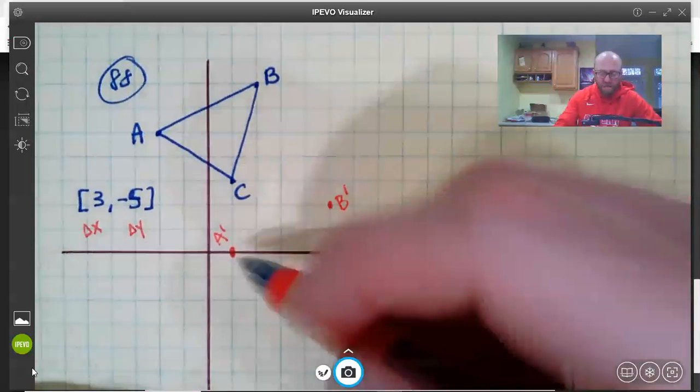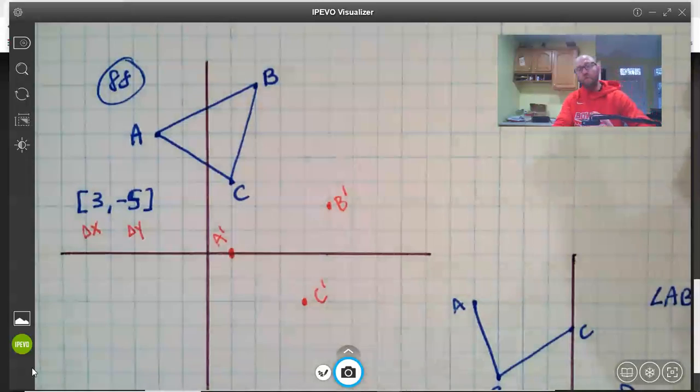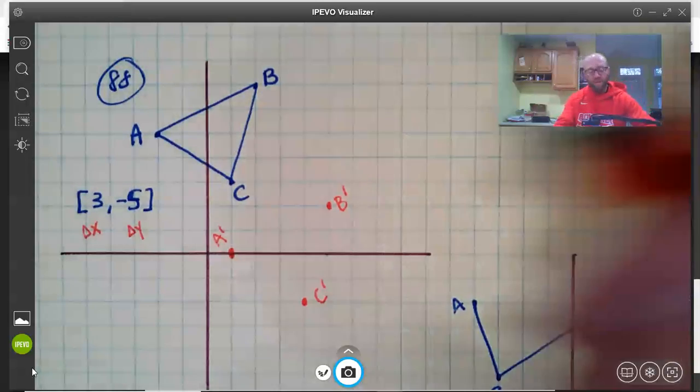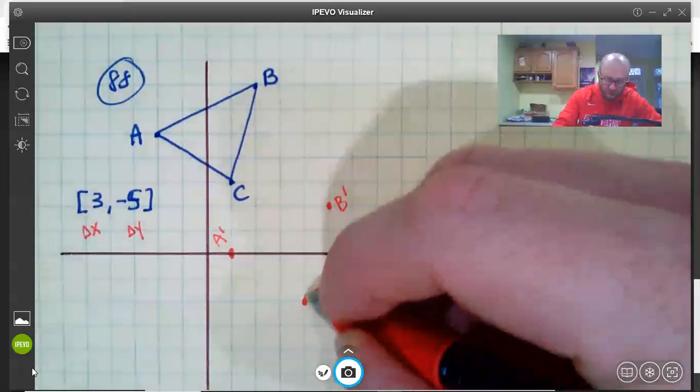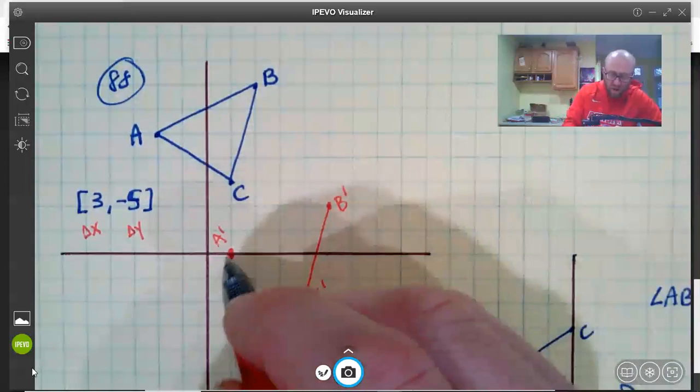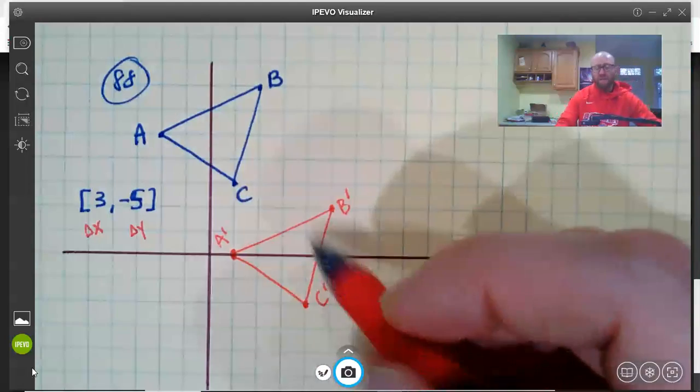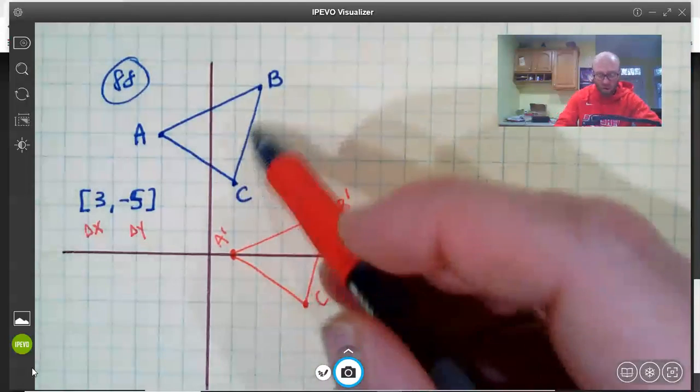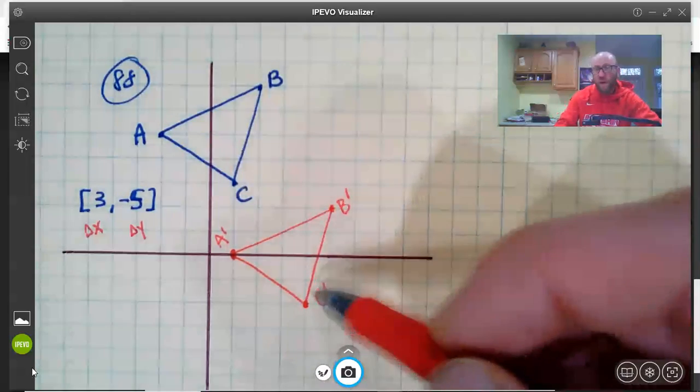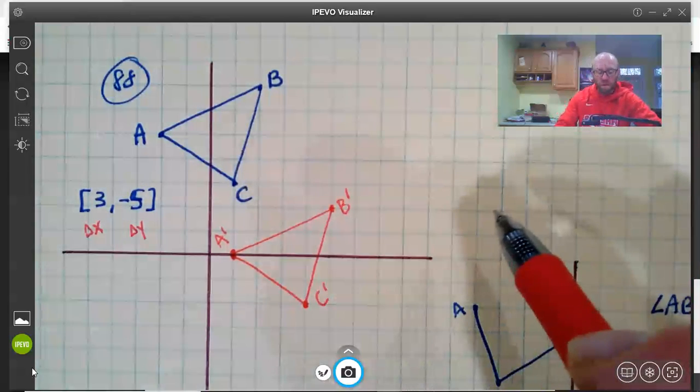Now it isn't just the three corners that get moved. Everything gets moved three spaces to the right and five spaces down. So let me just connect everything with these straight lines, and that indicates that all the other points in the triangle also got moved along with the first one.